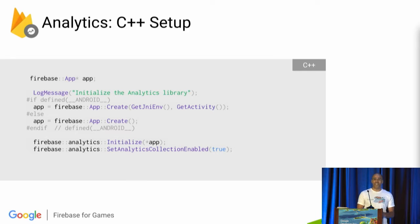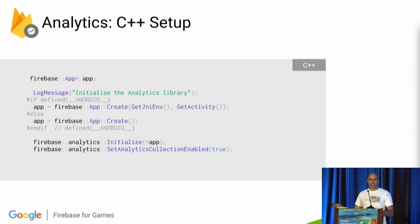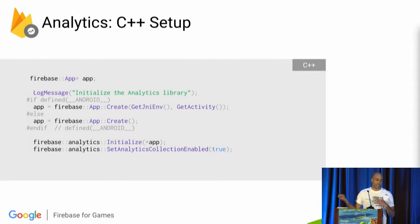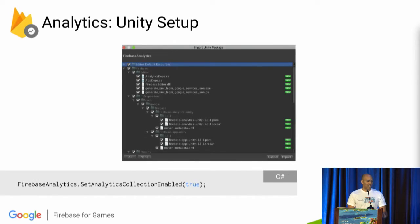So try it out now — it's really easy. This is all the code that you need if you're a C++ developer. There is some build setup if you're C++, but this is all you need to get going with Analytics, and this gives you all the built-in event tracking. In Unity, you just import a plugin, write a couple of lines of code — this is the key one here — and you're off and running.